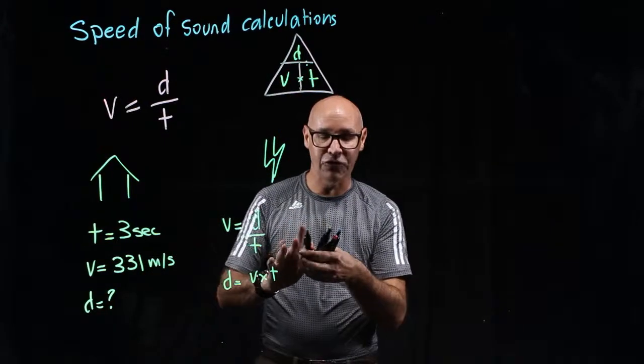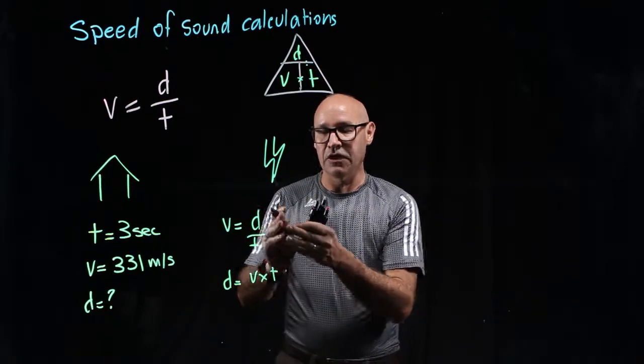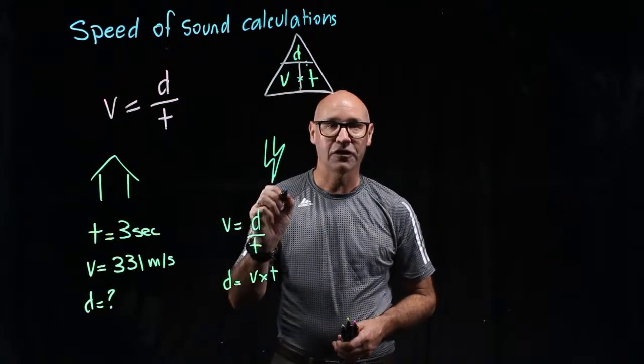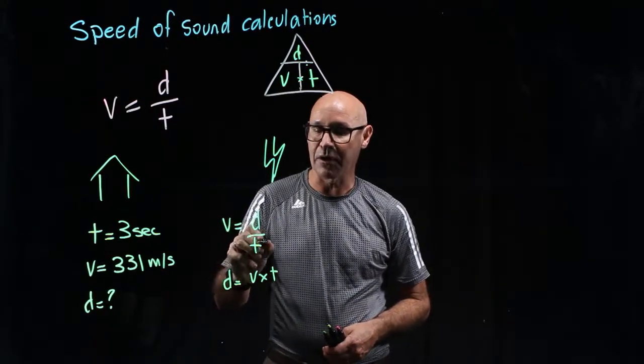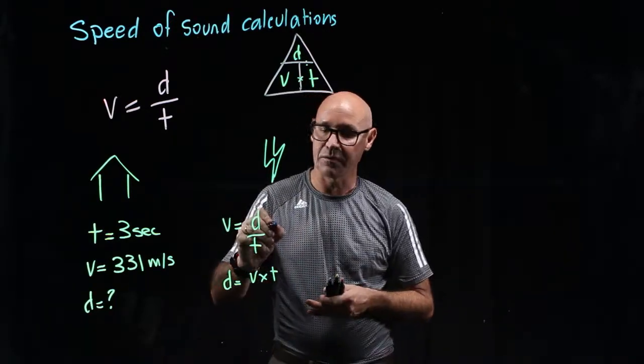Another way we can do this, if you want to do it mathematically, we've got to get D by itself. So, to do that, we need to get rid of this, divided by T. So, to do that, because it's divided by, to get rid of it, we need to do the opposite to divided by, which is times.